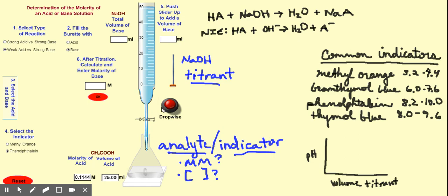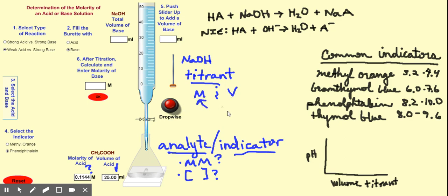Now, what exactly are we doing here? You know the volume of the analyte that you have, and you're trying to figure out the molarity or the molar mass. What we do know is the molarity of the titrant, and we can figure out the volume of titrant used.